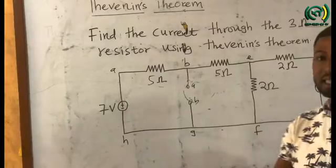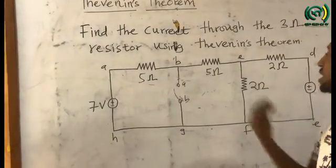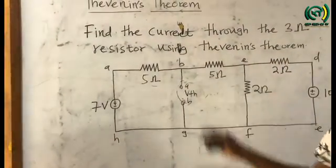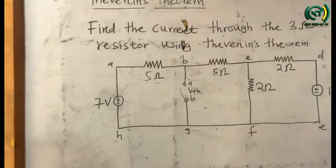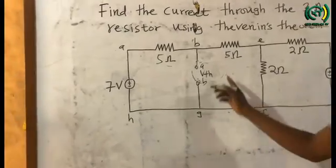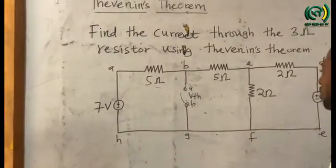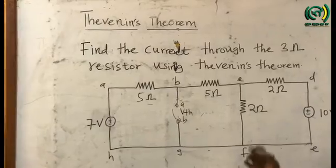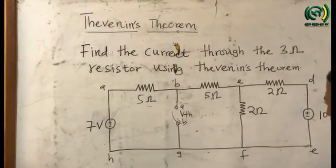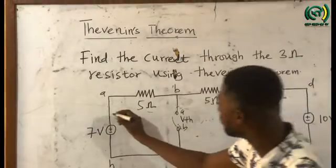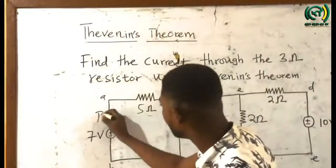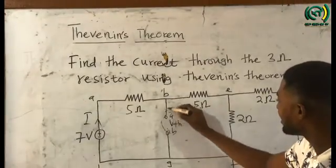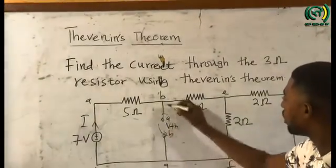We move on to find our Thevenin's voltage VTH — the voltage seen between the terminals — by using Kirchhoff's voltage law. We can solve this circuit by representing it with a loop, going around nodes A, B, E, G, H, F. This is the voltage source which will drive current I. This current flows through the 5-ohm resistor, but when it reaches this junction, since this is an open circuit, no current will flow through the open circuit path.